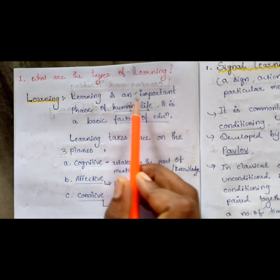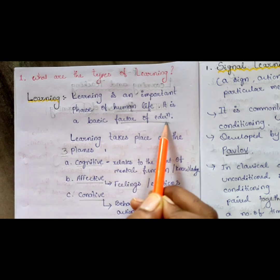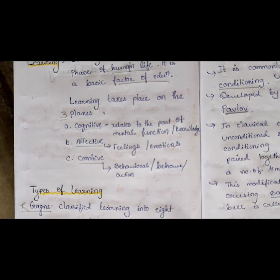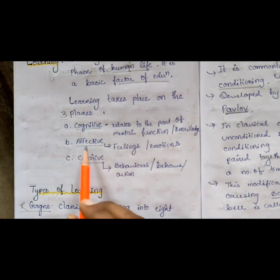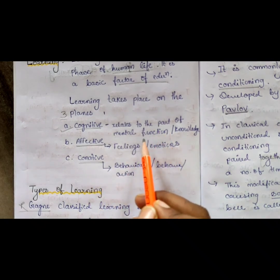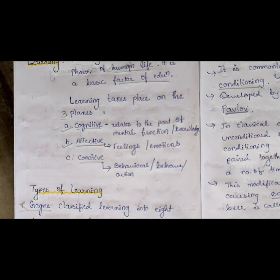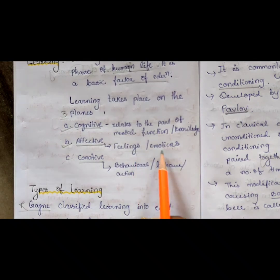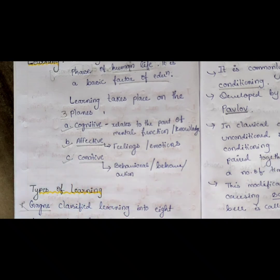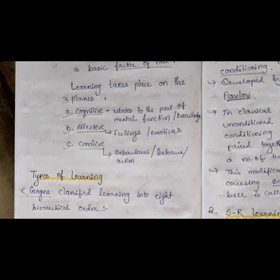Learning is an important phase of human life; it is a basic factor of education. Learning takes place on three planes. The first is the cognitive component, which relates to mental function and knowledge. The second is the affective component, which deals with a person's feelings and emotions. The third component deals with behavior, habits, and actions.